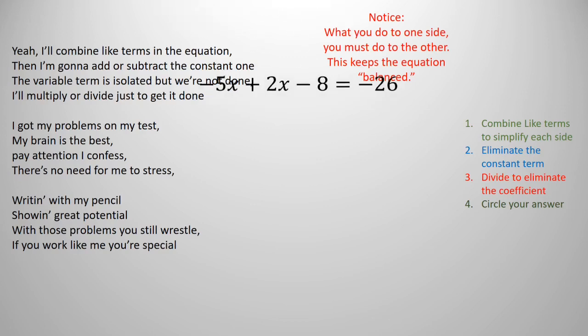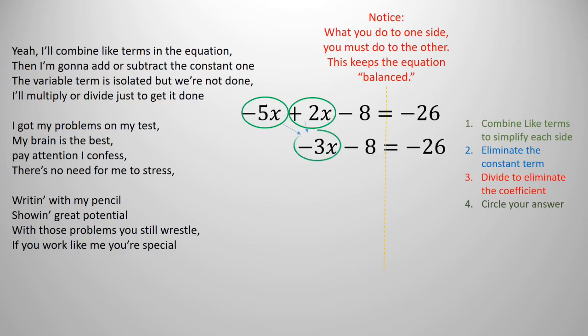I'll combine like terms in the equation, and I'm gonna add or subtract the constant one. The variable term is isolated, but we're not done. I'll multiply or divide just to get it done. Got my problems on my test.